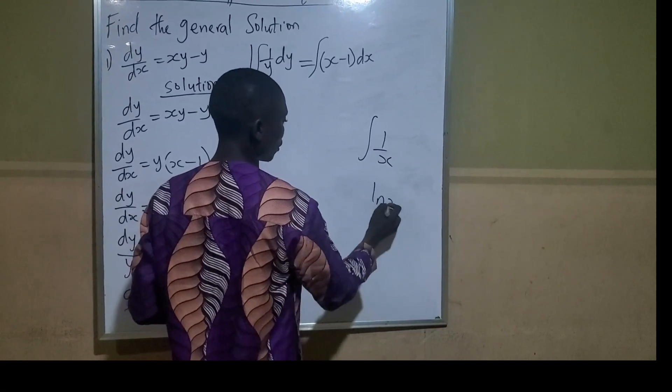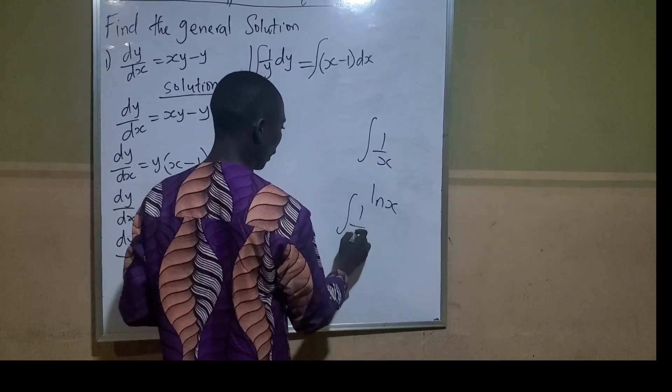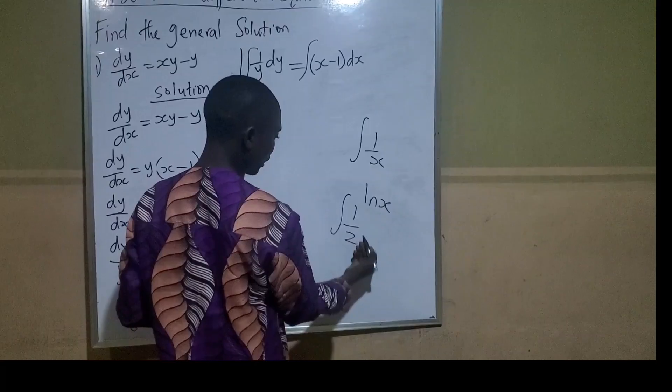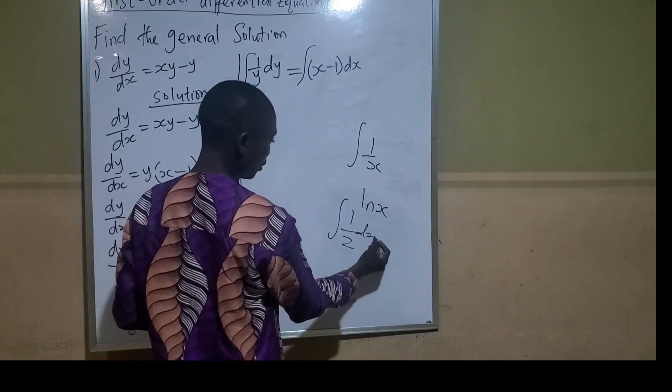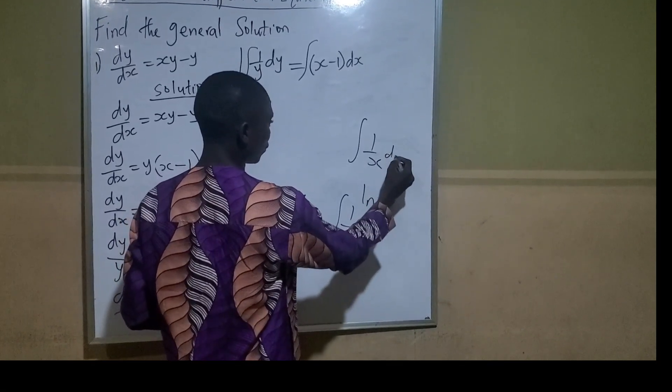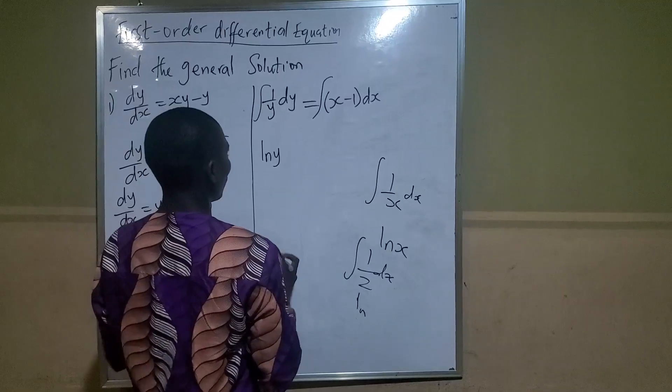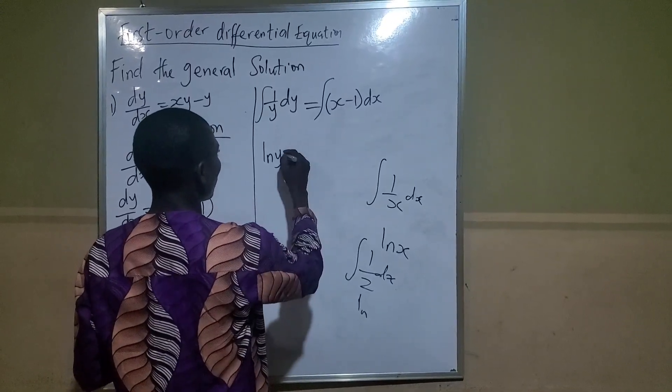If you integrate 1/z with respect to z, it gives ln|z|. With respect to dx, it gives ln|x|. Now, what about this part on the right side?